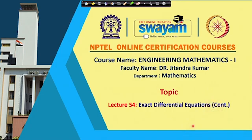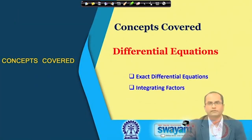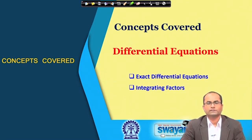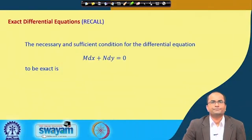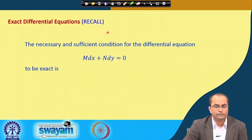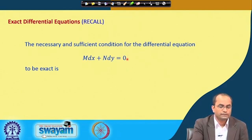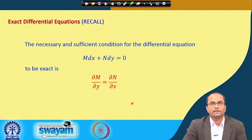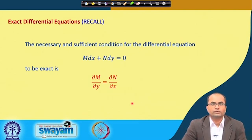We will continue discussing exact differential equations, and in particular we will be talking about today when the given differential equation is not exact but can easily be made exact — and that is where the introduction of the integrating factor will come into picture. Just to recall, we have the necessary and sufficient condition for exactness: the differential equation M dx plus N dy equals 0 is exact when del M over del y equals del N over del x. This is necessary and sufficient, meaning if this condition holds then the equation must be exact, and if exact then this condition must hold.